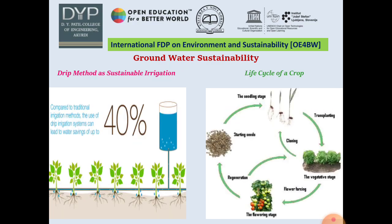Looking at the different irrigation methods for crops, there are many methods. The most traditional method is inundation or flooding, in which furrows are formed and water is given to crops by flooding. This method is not sustainable. The most sustainable method is drip irrigation, which saves about 40% of water compared to the traditional method. We have to consider the complete life cycle of a crop — the total base period — and calculate when and how much water should be given, which can be efficiently achieved by drip irrigation.